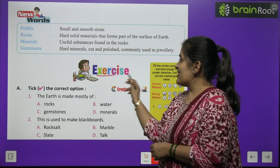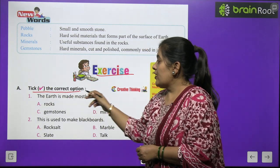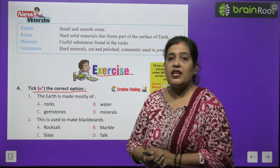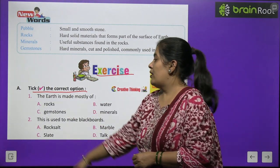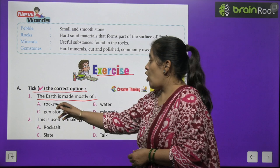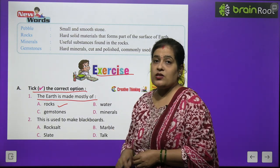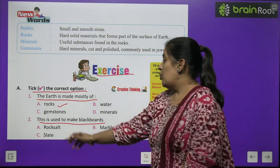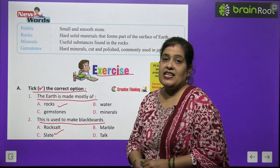Now it's time to do some exercises. Exercise A: Tick the correct option. Number one — the earth is made mostly of rocks. Number two — this is used to make blackboards: the answer is slate (S-L-A-T-E). Number three — this is built of sandstone: the answer is the Red Fort.